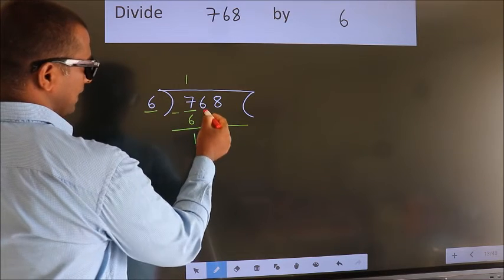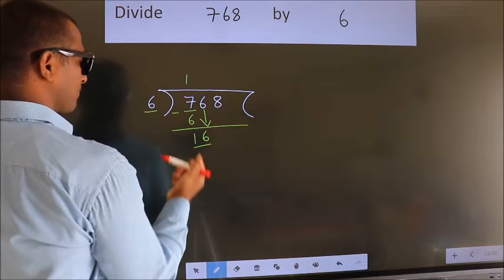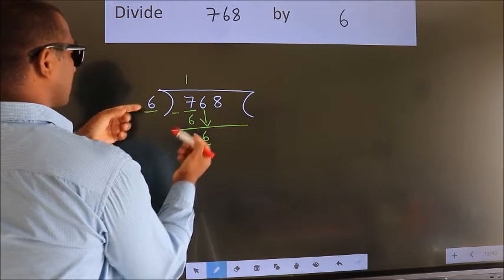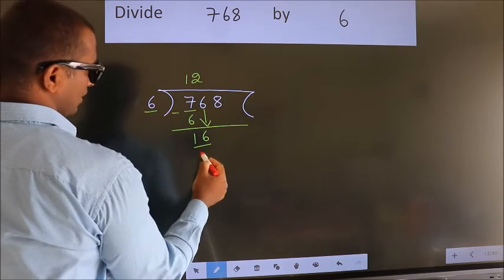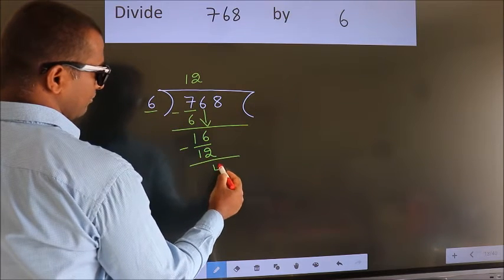After this, bring down the beside number. So 6 down, making 16. A number close to 16 in the 6 table is 6 twos, which is 12. Now we subtract. We get 4.